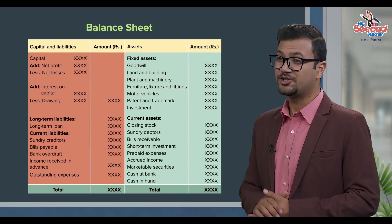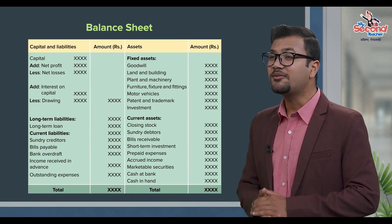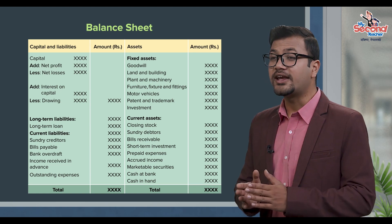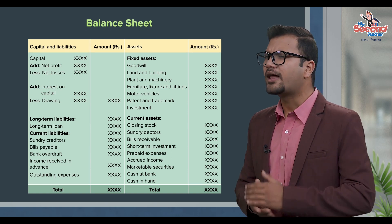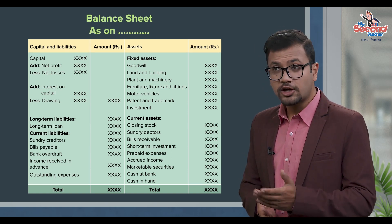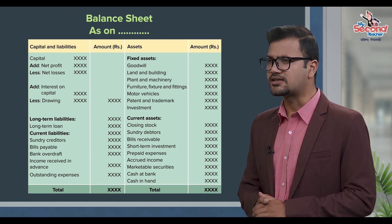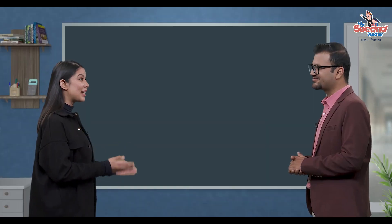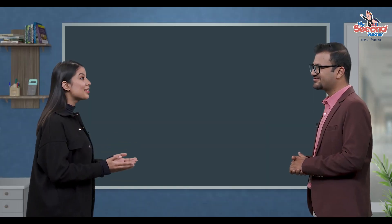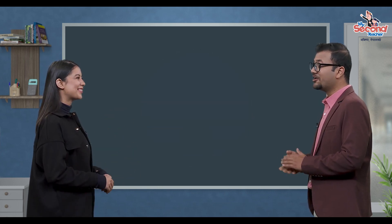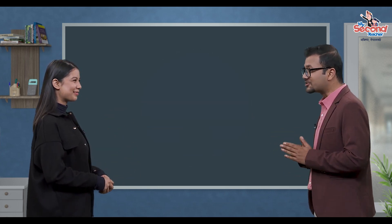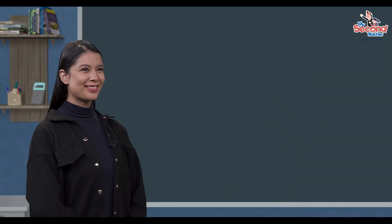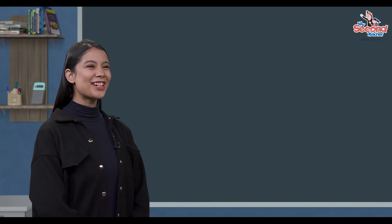The left side has 2 columns: capital and liabilities, and the amount. That's right, teacher.